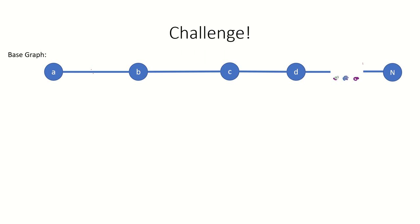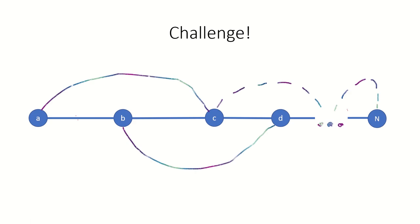Then consider this graph. We start with the same line of vertices connecting each one to the next except we will now also connect each vertex to the one two down the line. We could call this skip two as we start with our base graph and connect vertices that are two edges apart from each other as well.